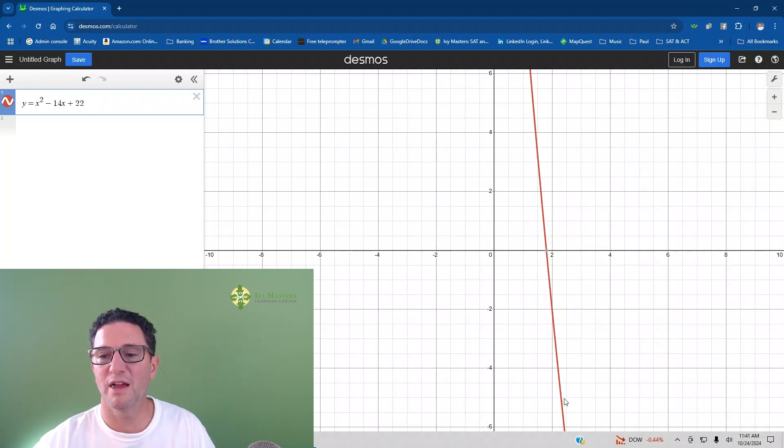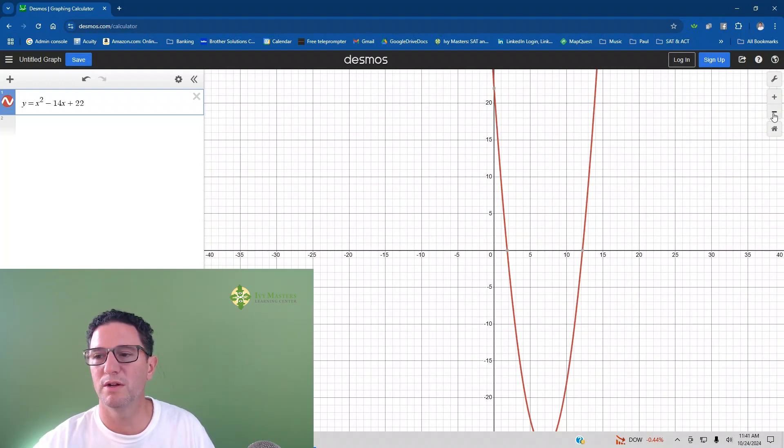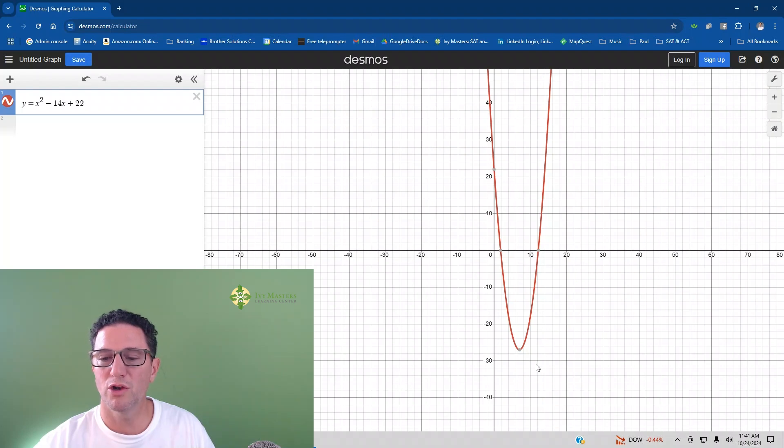You're going to see it just looks like a line. You might be thinking, oh, but I should have a parabola. Make sure you zoom out. I'm a fan of hitting the minus. I know you guys are like crazy with the zoom. Sometimes you zoom out way too much.